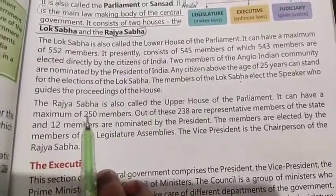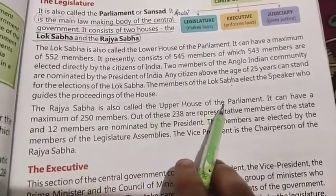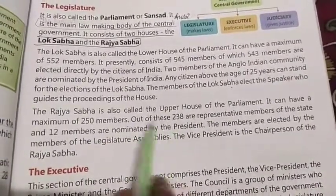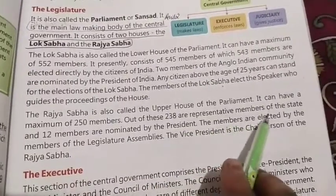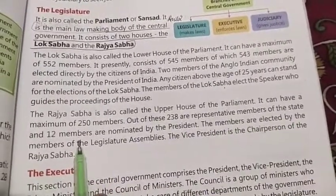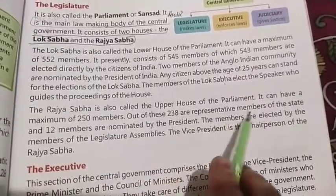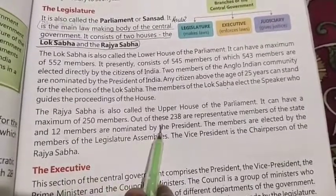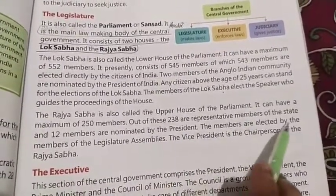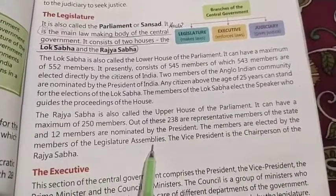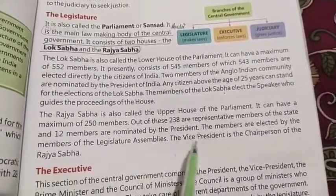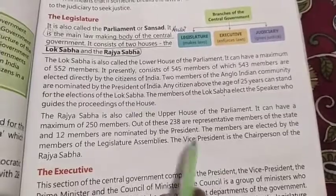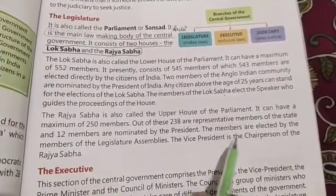Then comes Rajya Sabha, which is called the upper house of the Parliament. It can have a maximum of 250 members. Out of these, 238 are representative members of the states, elected by the members of the Legislative Assemblies, and 12 members are nominated by the President. The Chairperson of the Rajya Sabha is our Vice President.